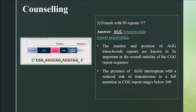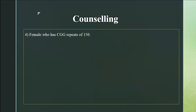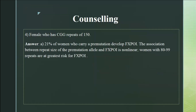Up to 100 repeats in a mother, there is still a chance of no expansion in the next generation. But between 100 to 200 repeats, irrespective of all modifying factors, it will definitely get expanded into full mutation in the next generation. Regarding premature ovarian insufficiency — it's a non-linear relationship. Females with repeats between 80 to 100 actually have a higher chance of premature ovarian insufficiency than those with 100 to 200 repeats.